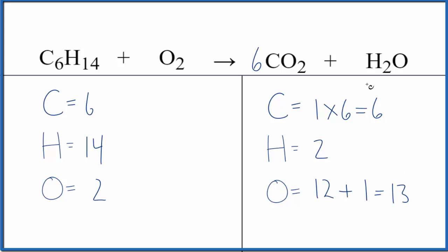Let's fix the hydrogens. Put a seven here. Two times seven, that's 14. Let's update the oxygens again. Six times two, that's 12 plus the seven times the one. 19.